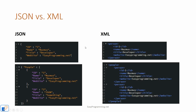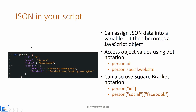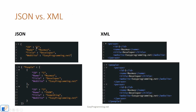Both JSON and XML support hierarchical values. So you have the person up here and then IDs down here. This is the main hierarchy, and then inside we have the sub-values — the sub-levels — separated by commas, whereas in XML they're separated by an end tag.